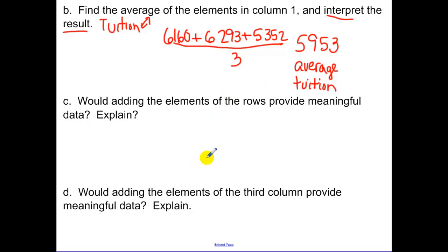Would adding the elements of the rows provide meaningful data? So remember, the rows were each one of the universities. Well, think about it. If you added, remember our rows, we had ISU, which we had tuition, and then we had room and board, and then we had enrollment. So if I added together tuition, room and board, that would help us out. But enrollment, that wouldn't be meaningful. So no.